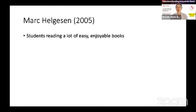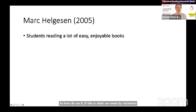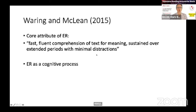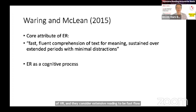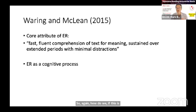Mark Helgerson has described extensive reading as students reading a lot of easy, enjoyable books. So how do we assess this? We're assessing whether the books are easy, whether students are enjoying themselves. Waring and McLean have looked at the core attributes of ER, considering it to be fast, fluent comprehension of text for meaning, sustained over extended periods with minimal distractions — looking at ER as a cognitive process. Again, if this is our definition, how do we assess extensive reading?